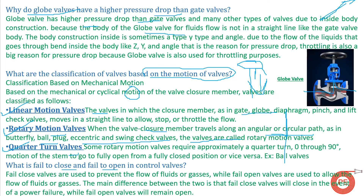The next question is: what is a fail-to-close and fail-to-open valve? This is a very important consideration when selecting a control valve or designing a process. In simple language: fail-to-open valves, when the power supply is cut or there is a problem with actuation, will remain open. Fail-to-close valves, regardless of their current position, will close when the power supply is lost.